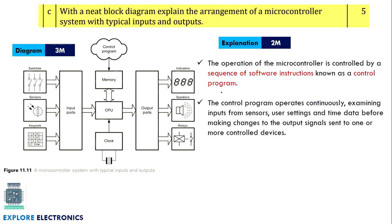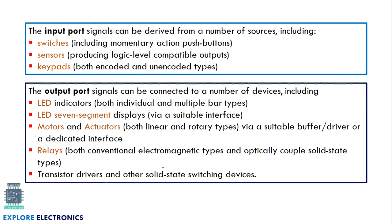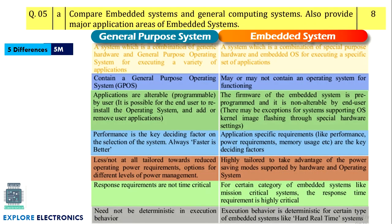With a neat block diagram explain the arrangement of a microcontroller system with typical inputs and outputs. The microcontroller system contains a CPU, memory, clock, and input/output ports within the device itself. We only connect external input and output devices. Input devices can be switches, sensors, or keypads; output devices can be LEDs, speakers, or relays. We need to explain the contents of the microcontroller and the input/output device connections.